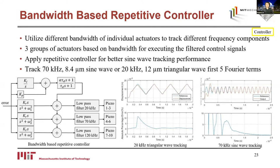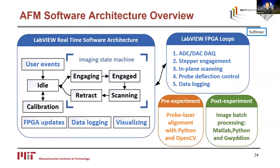Now let's take a look at the software interface implementing these controllers. The overall software architecture is shown in this diagram. The main imaging software is implemented using LabVIEW on a National Instruments PXIe hardware platform. The real-time software uses an event-driven state machine architecture to handle high-level user interactions and manage imaging state transitions — including idle, engage, scanning, and retract — with an additional calibration state. The FPGA system uses five parallel loops for low-level hardware interfaces. The pre-experiment software for probe-laser alignment is implemented using Python and the OpenCV library, and the post-experiment software for image batch processing is implemented in both MATLAB and Python.